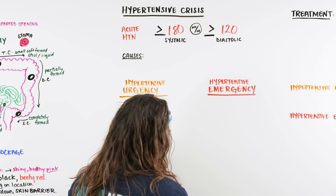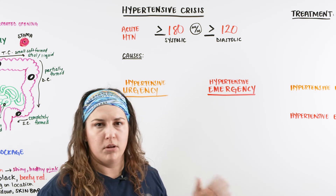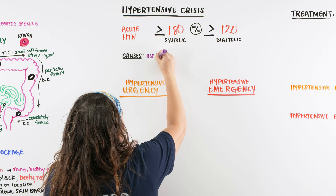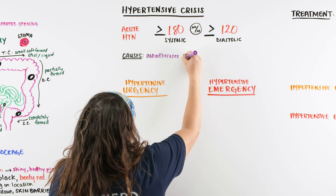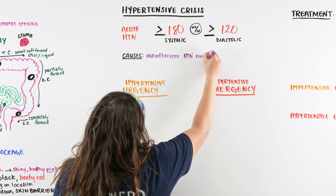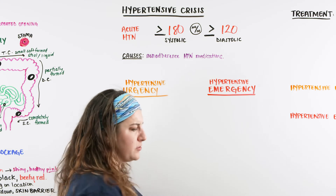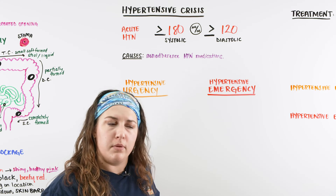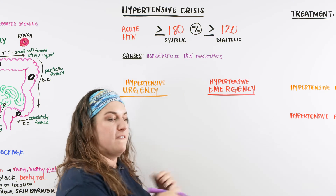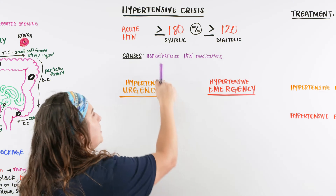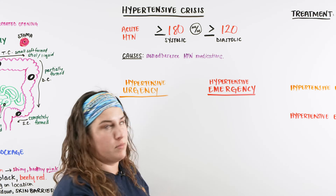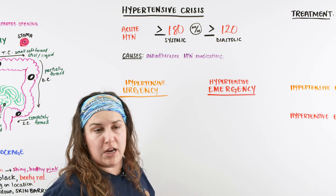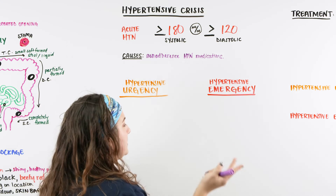Why does this occur? The biggest cause is typically a patient who is non-adherent to their hypertension medication. Patients often believe that once they take medication and feel better, they no longer need it. Some patients don't have money, their insurance isn't covering the medication, they can't comprehend how medications work, or they simply refuse to take them daily. So medication non-adherence is one major cause.